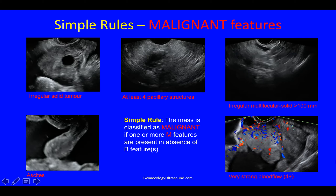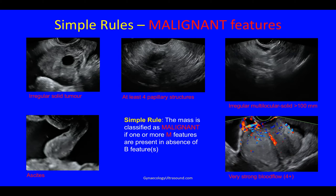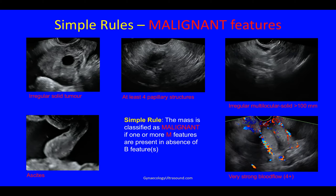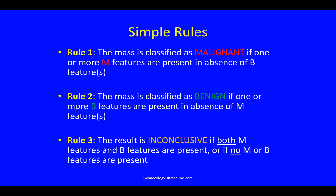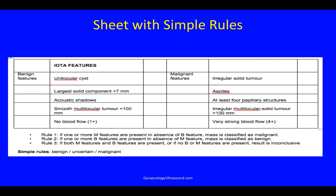These are all malignant features. The simple rule is that the mass is classified as malignant if there are one or more malignant features in the absence of a benign feature. The mass is classified as benign if there's one or more benign features in the absence of malignant features. But the result is inconclusive if there are both malignant and benign features, or no malignant or benign features.